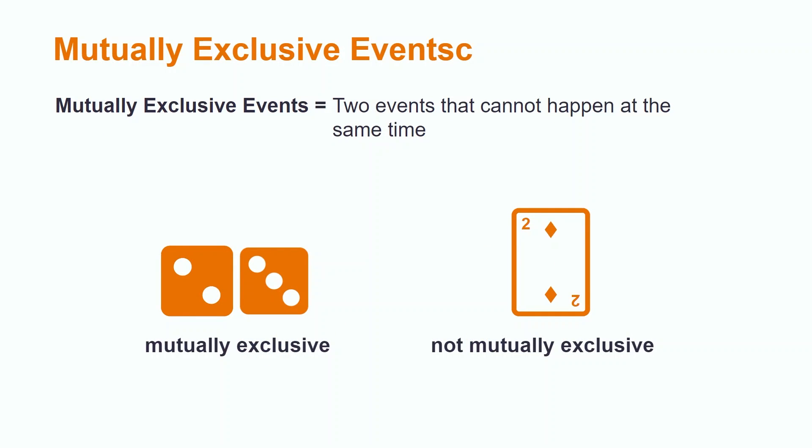Mutually exclusive events are events that cannot happen at the same time. Another word for mutually exclusive is disjoint. For example, it is impossible to roll both a 3 and a 2 on a die, so these events are mutually exclusive.